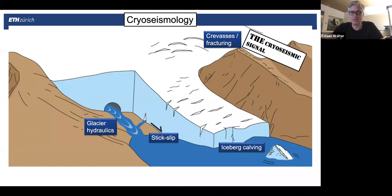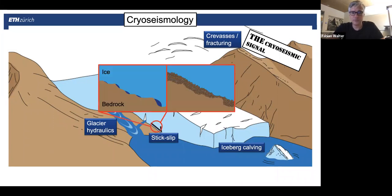Iceberg calving — the production and detachment of icebergs — is a very prominent seismic source. What I will focus on, and what most people are quite excited about, are seismic signals related to sliding. Sliding is a very important mechanism for glaciers to move, and seismology seems to finally provide us with a method to measure sliding from the surface. With borehole techniques or other techniques, it's very difficult to measure sliding.